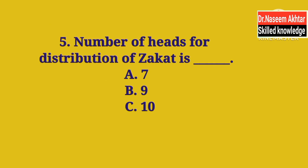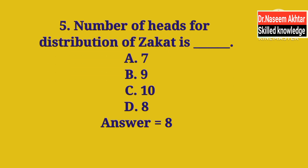MCQ 5: The number of heads for distribution of Zakat is — A. 7, B. 9, C. 10, D. 8. کتنے heads ہیں جن میں Zakat distribute کر سکتے ہیں؟ The correct answer is D — 8. Number of heads for Zakat distribution are eight.